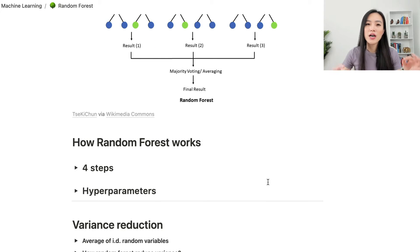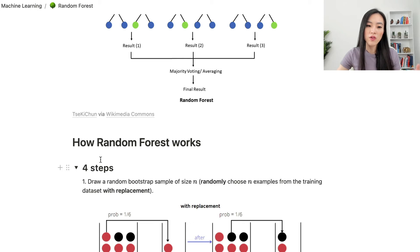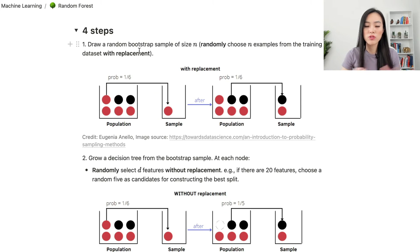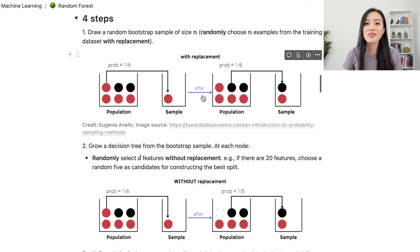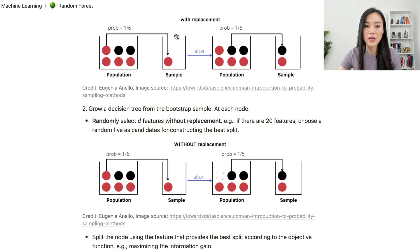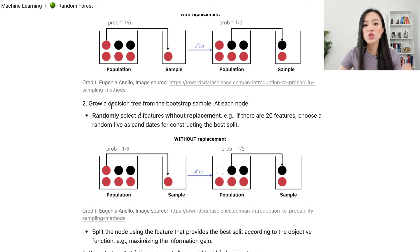Now let's look at the details and understand how it works step by step. There are four steps in the algorithm. To construct a random forest, we first draw a random bootstrap sample of size n — we randomly choose n examples from the training data set with replacement. This means that one training example may appear multiple times in the bootstrap sample.